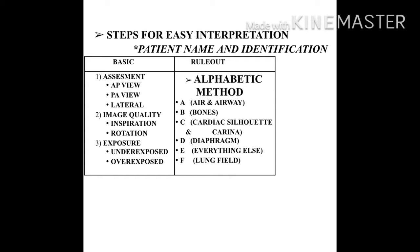Let's go to the steps for easy interpretation. As usual, start with patient name and identification. We can divide the assessment into two sections: basic and rollout. In the basic section, assess the x-ray view — AP, PA, or lateral — then image quality (inspiration and rotation), and then exposure. In the rollout section, we divide from A to F: A is air and airway, B is bones, C is cardiac silhouette and carina, D is diaphragm, E is everything else, and F is lung field.